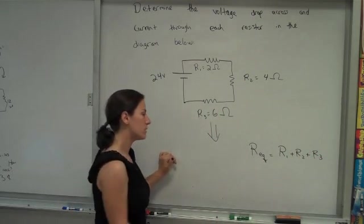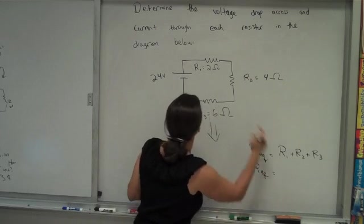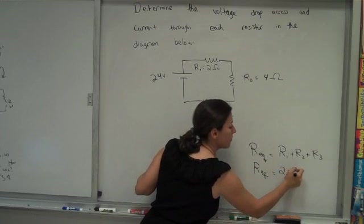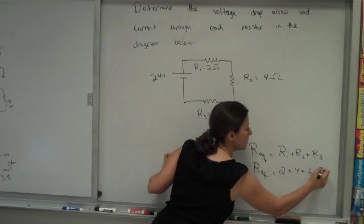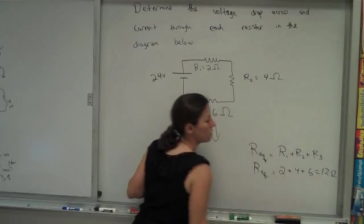So the equivalent resistance in series, in this particular case, we have a 2 ohm and a 4 and a 6. The equivalent resistance is 12 ohms.